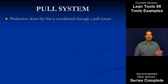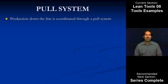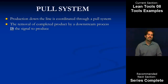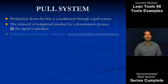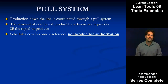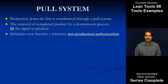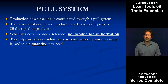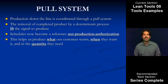Then for pull systems and how we can actually use them: this is the method we use to coordinate production down the line. The trigger for that is the removal of completed product — when the product is removed, that's the signal to produce. When we can implement a pull system, those sequence schedules we put in at the start to establish stability become just a reference, not the production authorization. The pull system takes over in managing the shop floor. More than a schedule, the pull system in real time is responsive to changing customer demand, and that's how we produce what customers want, when they want it, and in the quantity they need.